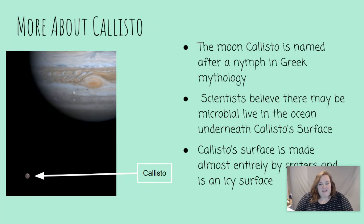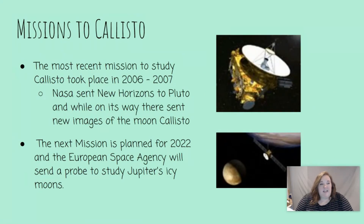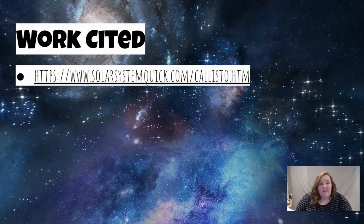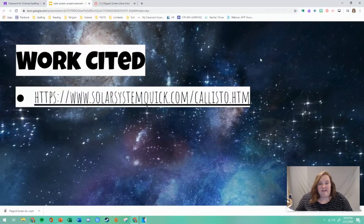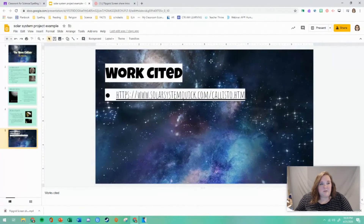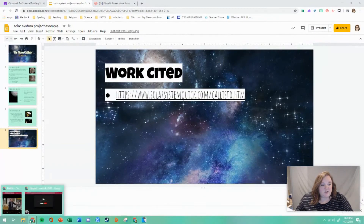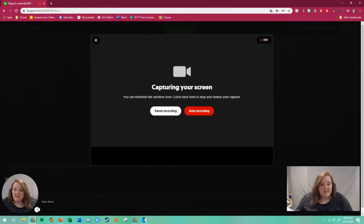Next I'm going to go to the next page. Again, you'd say more information — this slide is talking about the different missions that have studied Callisto. Moving on, these are the sites I used, and that is my presentation. Then you'll exit out and go back to your tab that has Flipgrid.